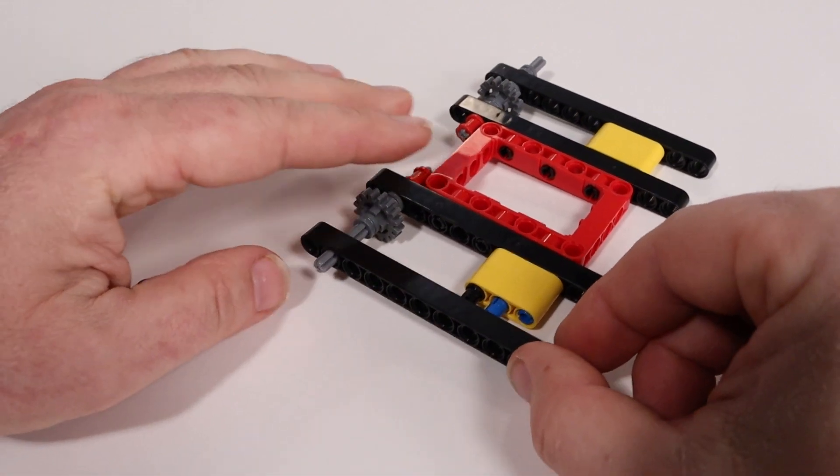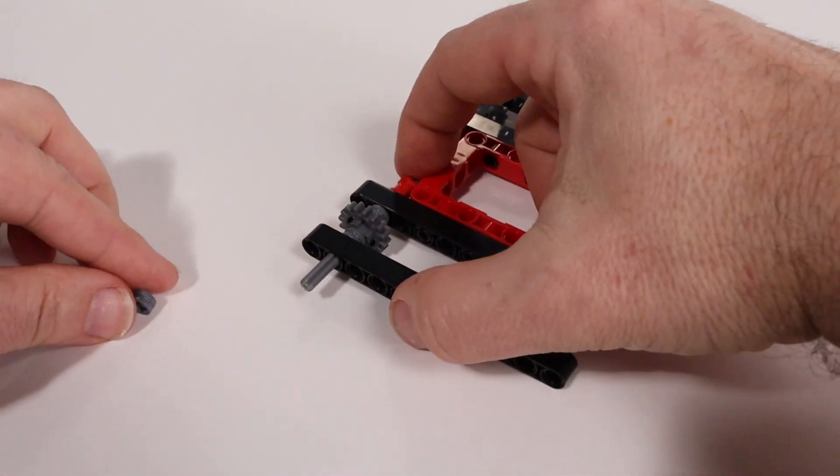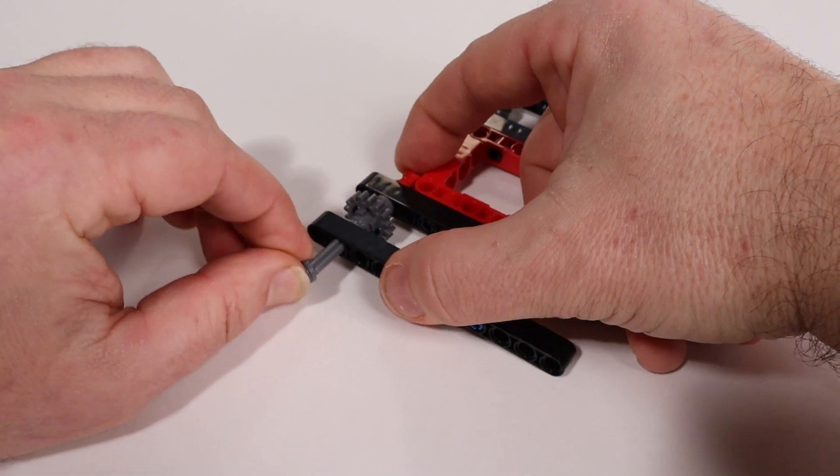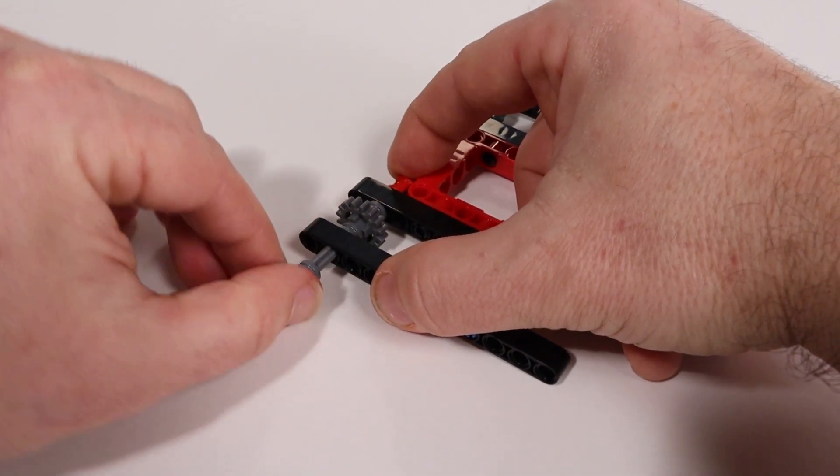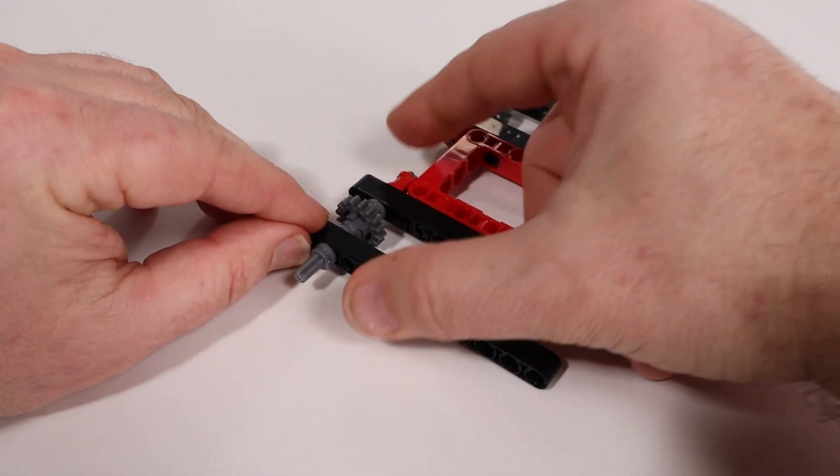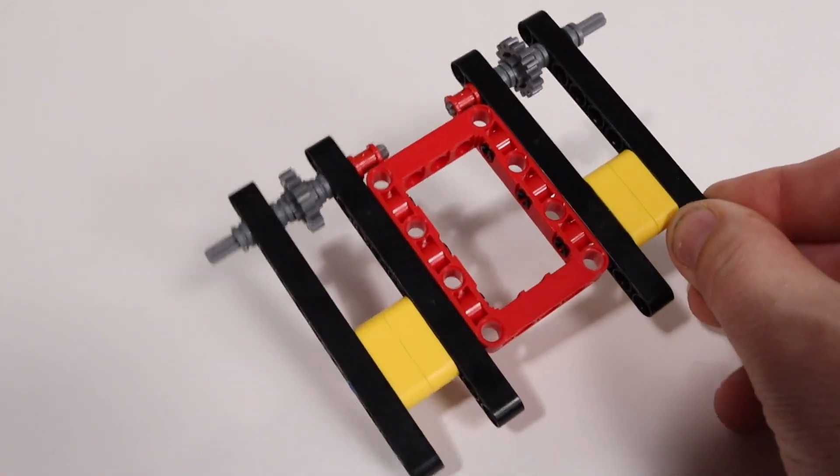Then do the same on the other side. Sliding on the beam and snapping it in place and then sliding the small half bushing all the way up. Here's what our project should look like so far.